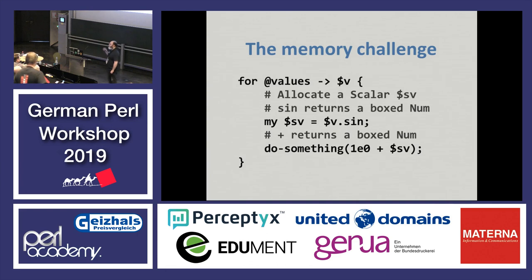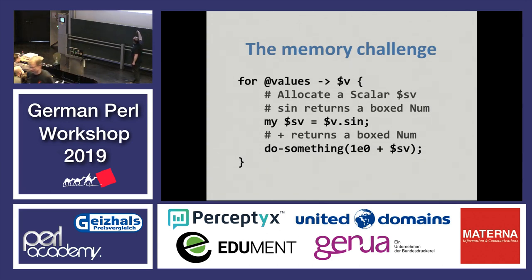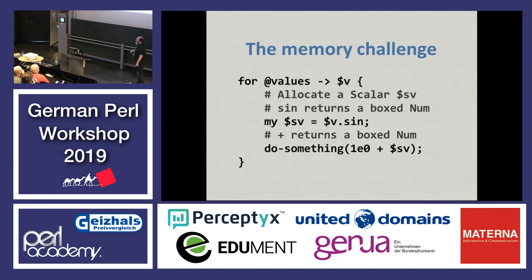Before we do that, let's talk a little bit more about the problem. Here's a tiny snippet of Perl 6. We are going over an array of numbers, calling the sign function on them. The sign returns a boxed num. This $sv here is a scalar container, so we assign the num into that — that's two allocations. Plus is an operator that takes a num and another num and returns another num, which is a boxed object. So this code here does three allocations, which is quite a lot.